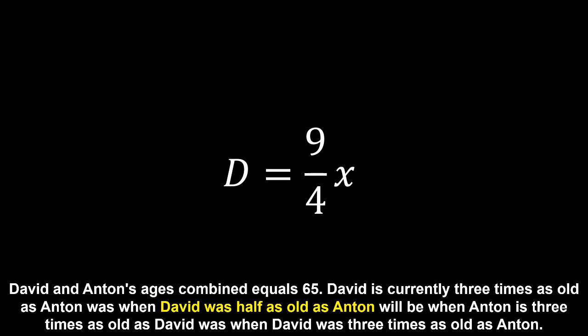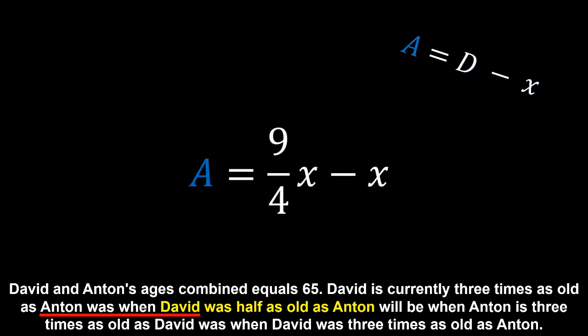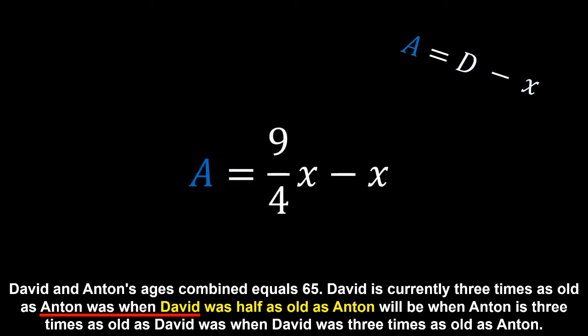From here, the comparison becomes a little more complicated again. So far we have only looked at the age David was when David, and Anton will be when Anton, but now we need to know Anton's age at the same time as David's age. We can take our formula describing Anton's age as David's age minus the difference, and if we subtract the age difference from both sides of the current equation, we can substitute Anton's age for the left side to get the age Anton was.